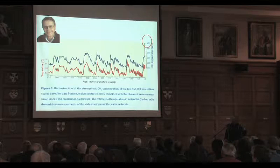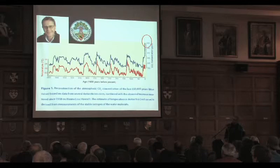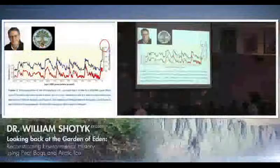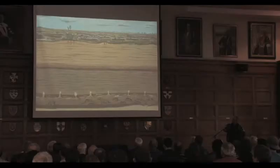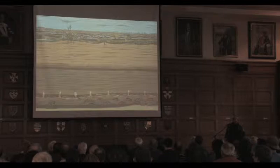Most of the work coming out on ice cores from Greenland and Antarctica is from the group of Professor Thomas Stocker at the University of Bern. It's amazing how Bern, together with Grenoble and Heidelberg, have become world leaders in this area. A lot of our basic understanding of global climate, at least for the past many glacial cycles, is coming from these ice cores.